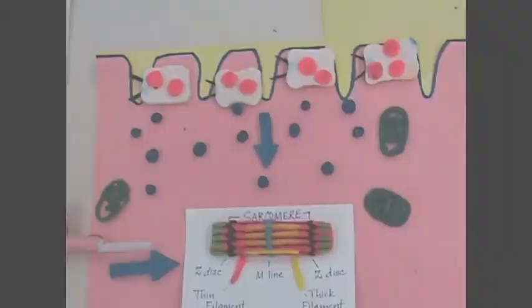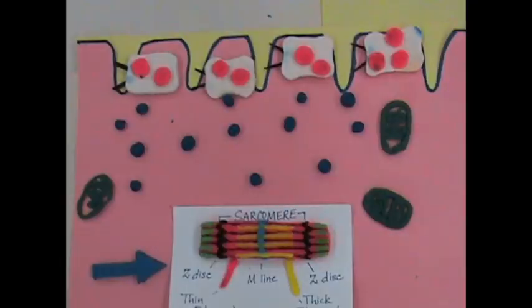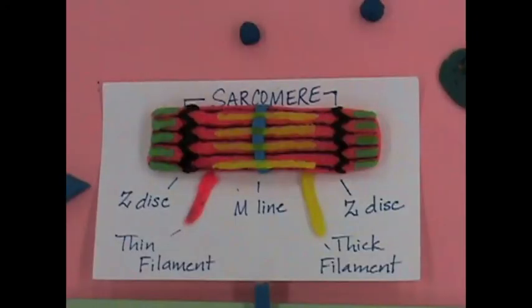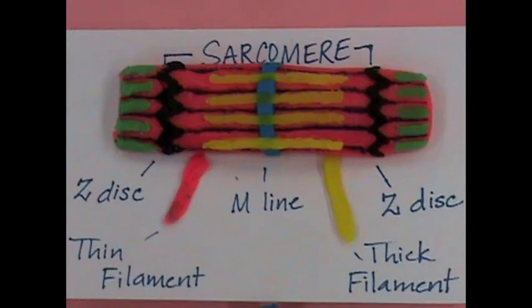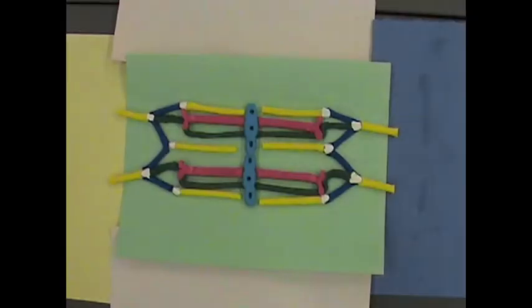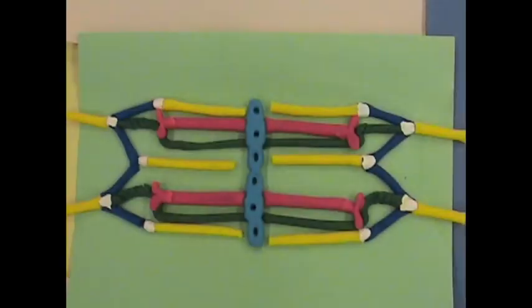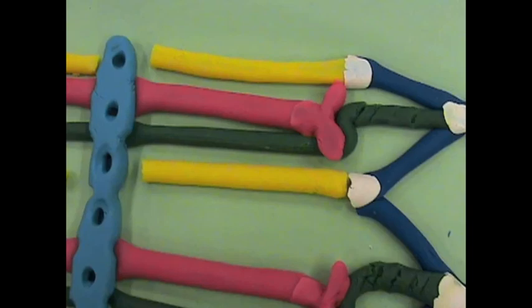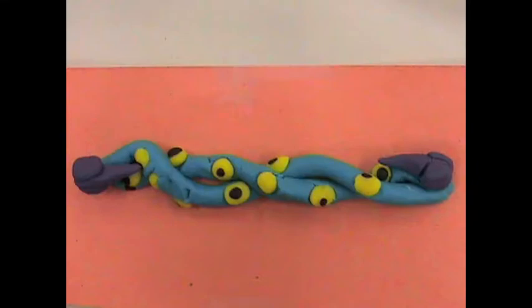Thick and thin filaments are found in the sarcoplasm of the myofibrils. Thin filaments consist of troponin, tropomyosin, and actin while the thick filaments consist of myosin.